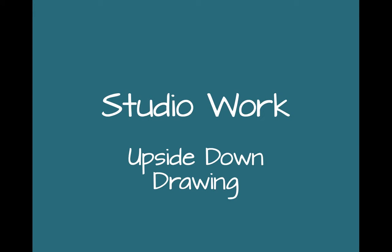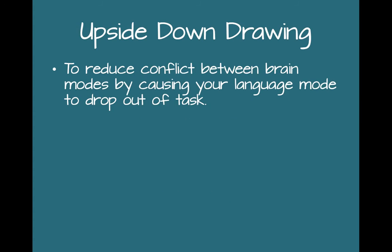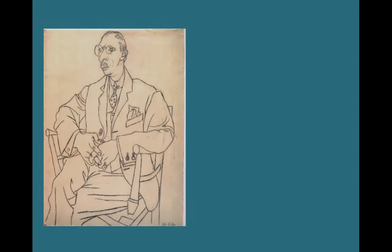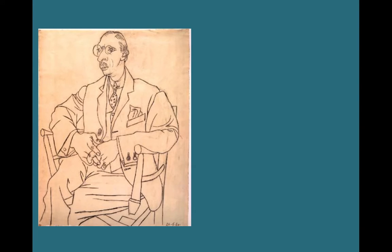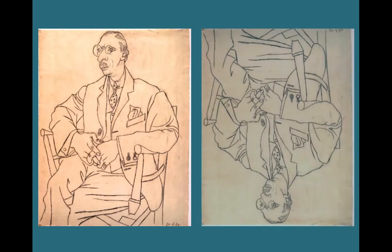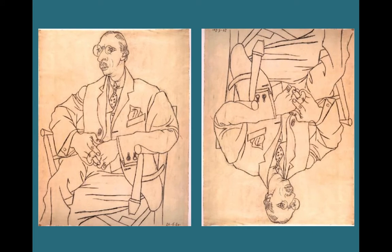Today's exercise is going to make you really focus on what you're doing. You're going to create an upside-down drawing of the following image — this is Picasso's drawing from 1920 of composer Igor Stravinsky. When you get the image, you're going to flip it upside down and draw it, focusing on lines and shapes rather than the object itself. You'll watch a video next that will explain step by step what you need to do.